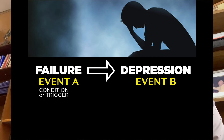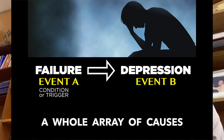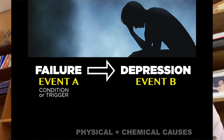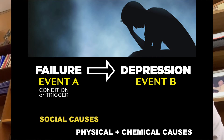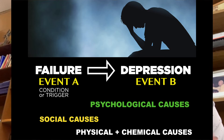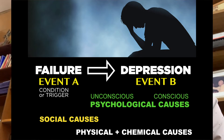Today, we understand that for someone to experience depression, there's a whole array of different types of causes that may interact with one another. The most basic would be the physical and chemical causes. It's possible that the person has some chemical imbalance in the brain, or perhaps the person has taken some medication that has caused such an imbalance. There are also social causes like a dysfunctional family or extreme peer pressure. And of course, there are psychological causes — the unconscious psychological causes like fears, traumas, and unmet needs.